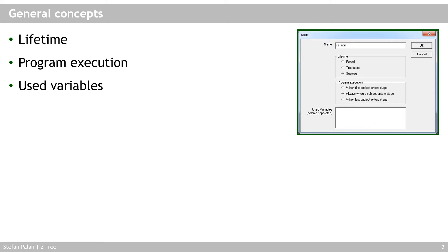You could create a table where you save subjects' decisions every period, then display this information in a box. Finally, a table of type 'session' survives for as long as Z3 is open, even if you start and finish different treatments. A session-lifetime table is often used to transfer information between treatments — for example, assigning roles in a second experiment based on performance in a first treatment.